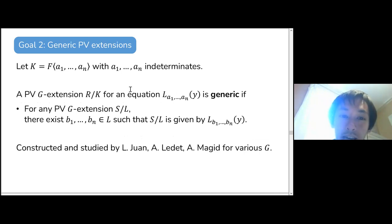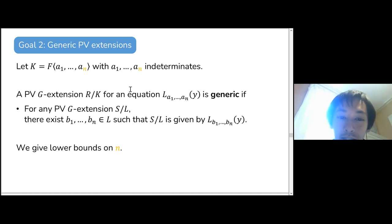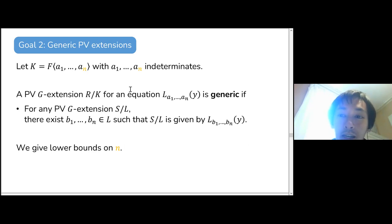A generic Picard-Vessiot extension is a very general one that can specialize to any other PV extension with the same Galois group. These have been studied and constructed. The goal is to show that if you write down a generic PV extension, you cannot be greedy — you must use at least a certain number of parameters.